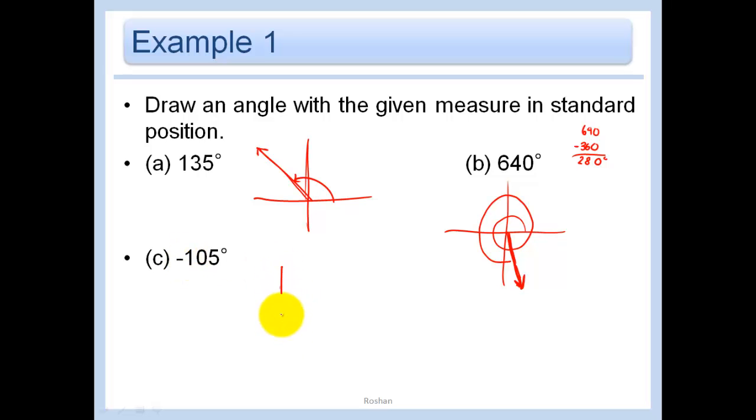Negative 105 degrees. Well, that's just going counterclockwise. So this would be 90, and that would be like negative 105 degrees right there.